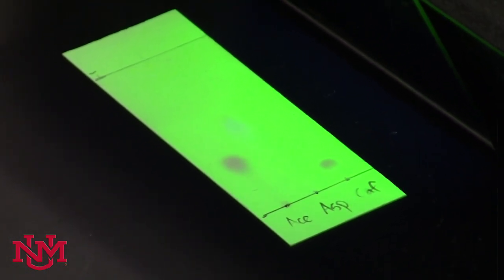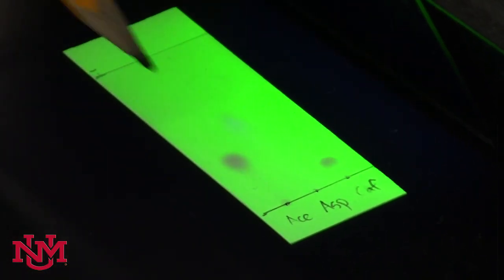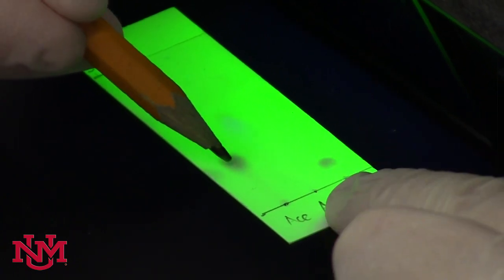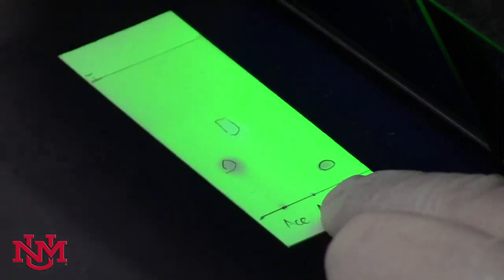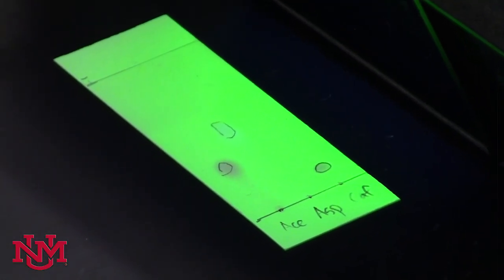Because this will fade over time, you want to gently circle the spots with a pencil and try to generally get the idea of where they're located. Then you'll have completed the visualization of the TLC plate.